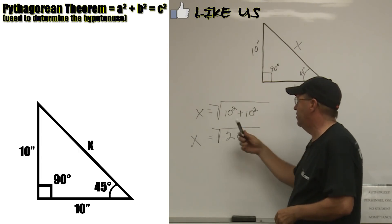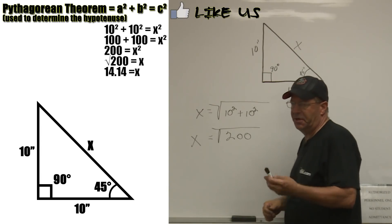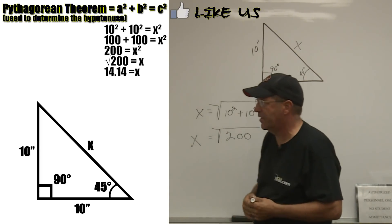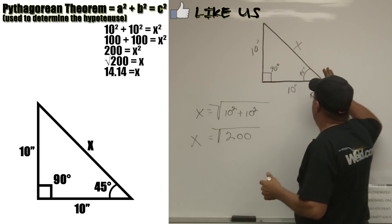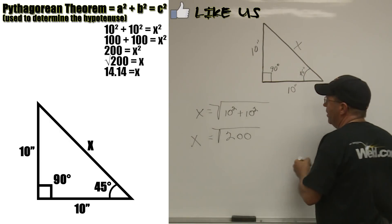So, Pythagorean's theorem, we're going to go 10 squared plus 10 squared, 100, 200, square root of 200. Go ahead and tell me what that number is. But think about this for a second. I don't care what it is, if it's a 45 degree angle, remember this number here.